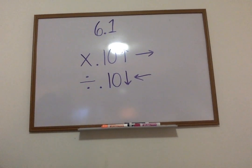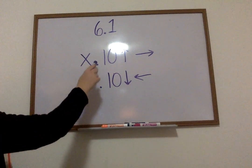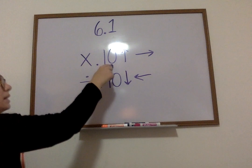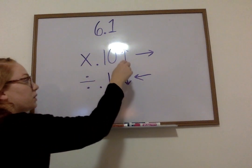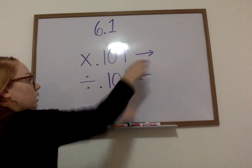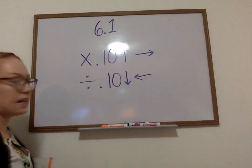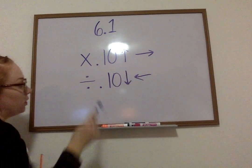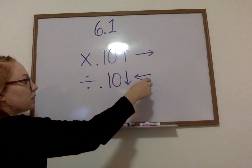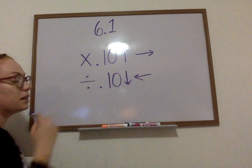So, just to refresh ourselves, when we multiply with a decimal and a 10, the number's going to get bigger, and your decimal's going to move to the right. But when we divide, it's the exact opposite. When you're dividing with a decimal and a 10, the number now goes down, and the decimal place is going to move to the left.